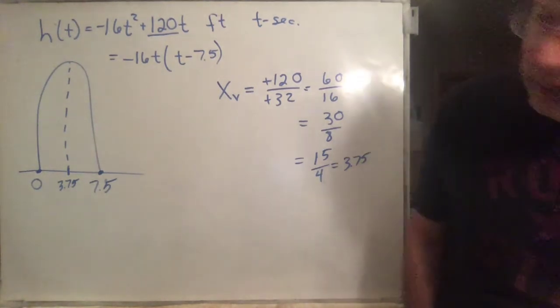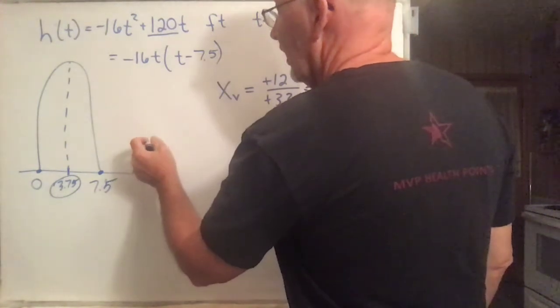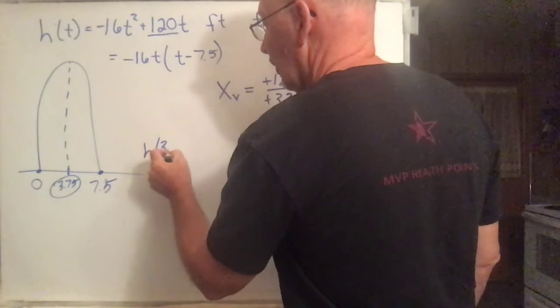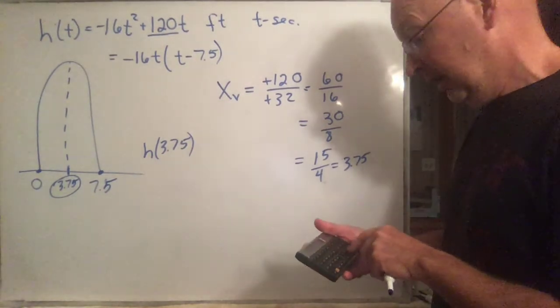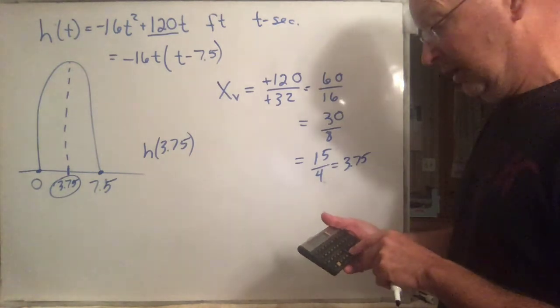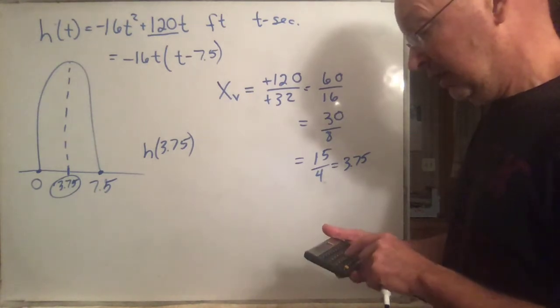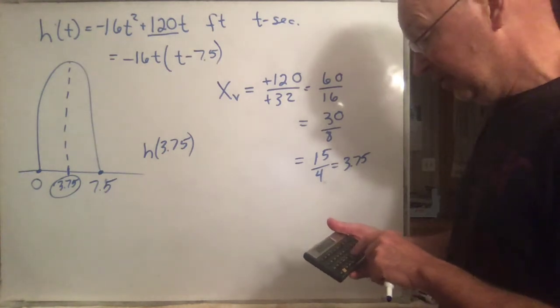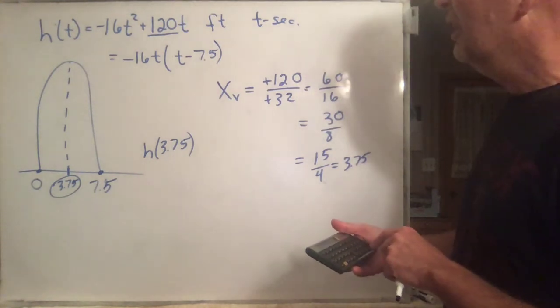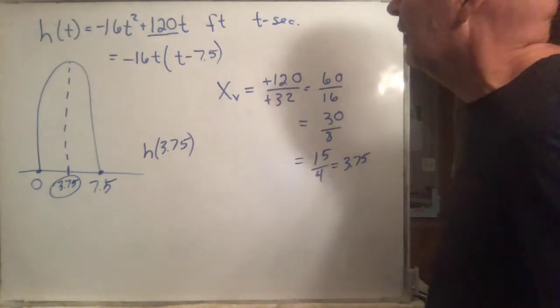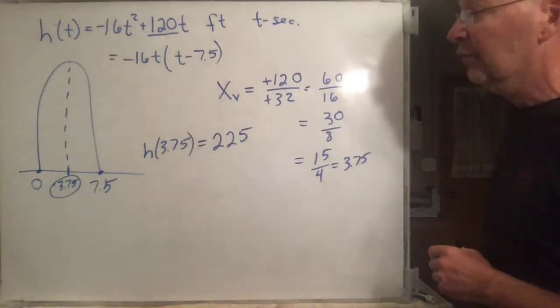And now you want to know, so that's the time when it hits the top. Now you want to know what that highest point is. So what do you do? You stick that in there, 3.75. And again, it's needlessly messy here. Let's go ahead and do it. So it's going to be 3.75 squared, then multiply it by 16, and then add that to 120 times 3.75, and then add those together. And you get 225 if I did it right. So when you stick that in, you get 225. So there's the highest point.